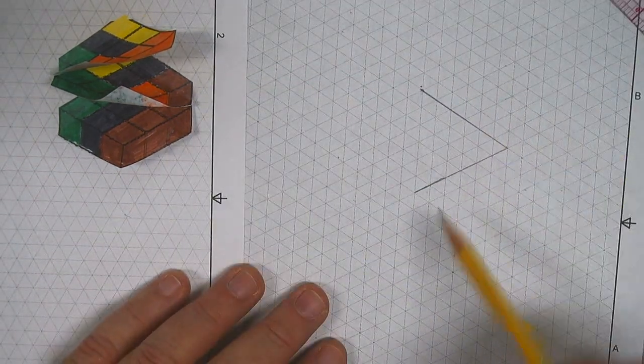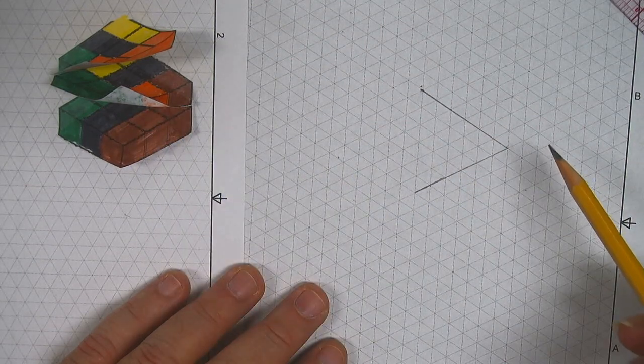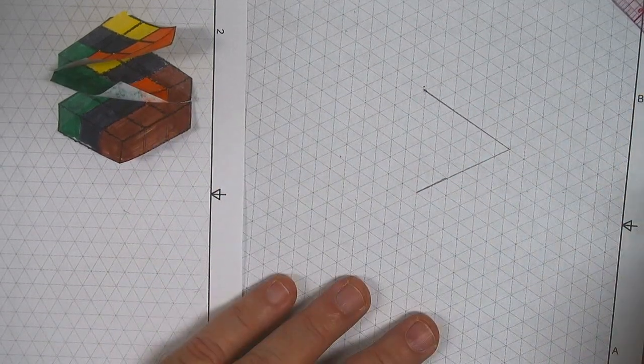All right, so I'm going to use that as basically my outside edges, three cubes by three cubes.